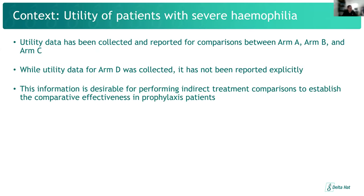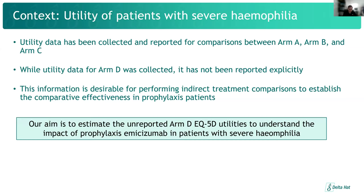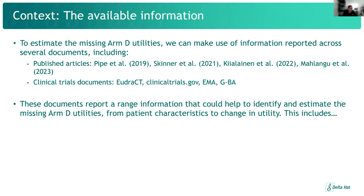The core problem is that although we have information on the utility for patients in Arms A, B, and C, we lack any information on the utility for patients in Arm D. This information is really important if we want to perform indirect treatment comparisons in populations like Arm D. The aim of this work is therefore to estimate the unreported Arm D utilities. Before outlining the approach developed in R, I'll give a quick overview of the available data.